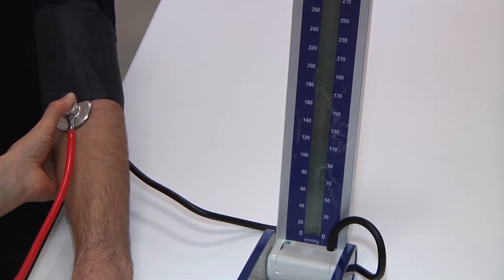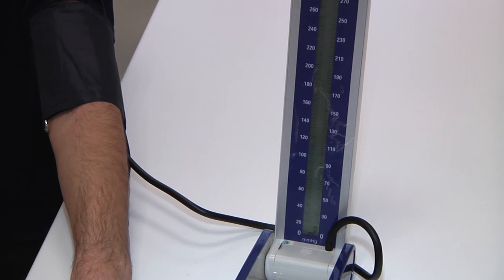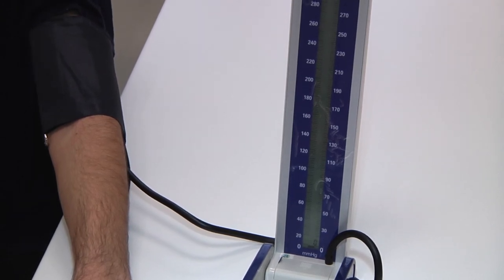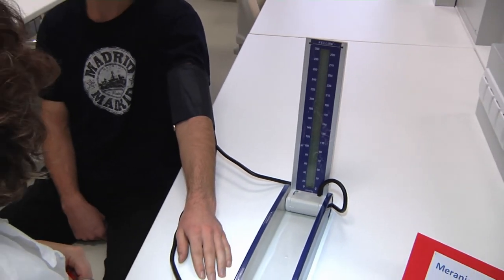The sounds disappeared when the cuff pressure was approximately 60, so we can say that the blood pressure is approximately 110 or 105 systolic blood pressure and diastolic blood pressure 60.